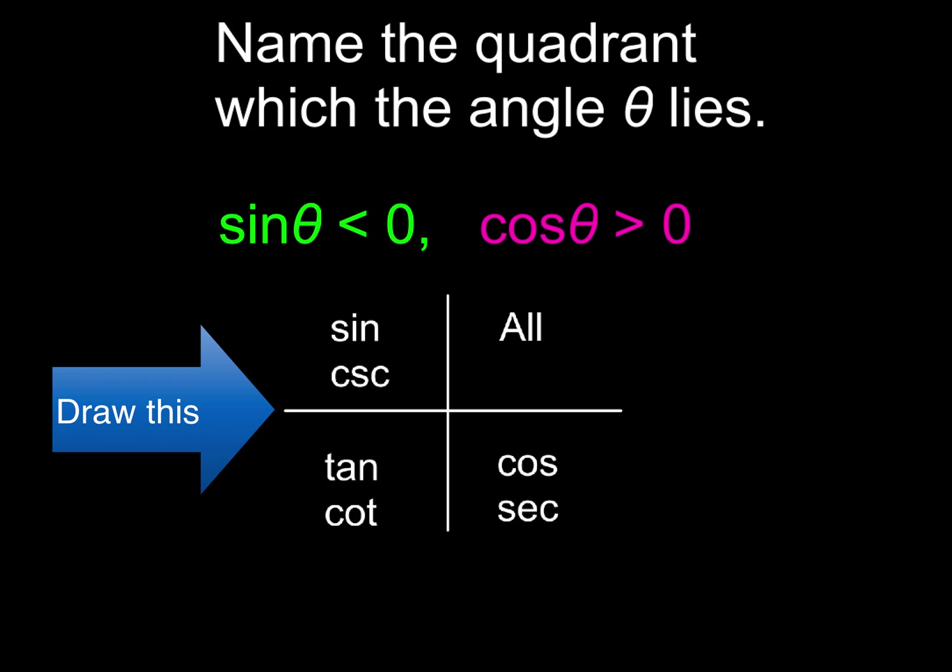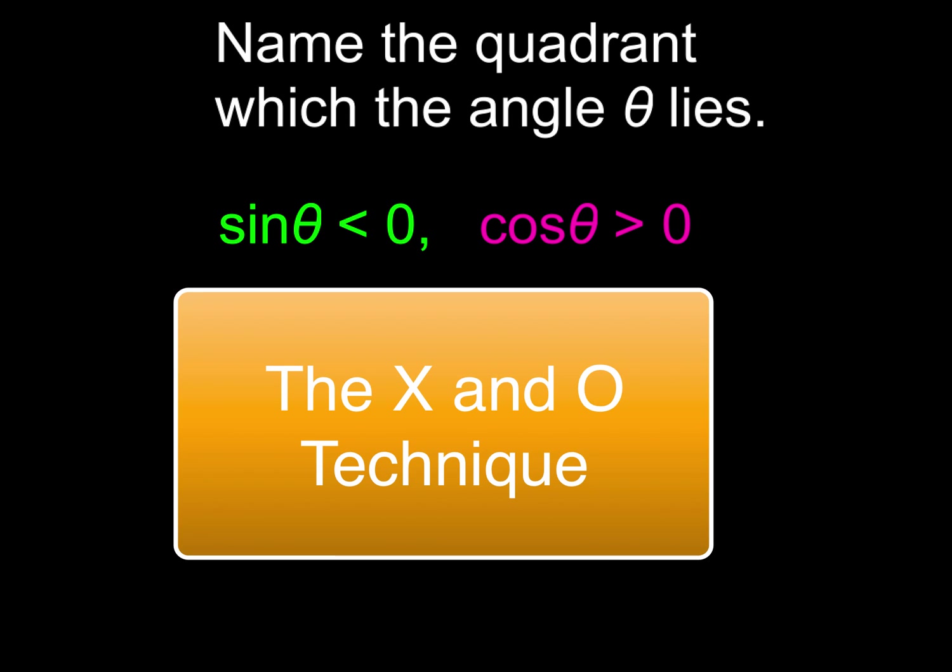Most people, when you get really good at this, you won't have to put all this information in it. But in the beginning, you might. Now, I like to call this the x and o game. So what I do for each one of the trig functions that I'm given, sine I'm going to make that an x. And then cosine, I'm going to make that an o. And for the two conditions that I'm given, I'm just going to put an x or an o anywhere that condition is true.